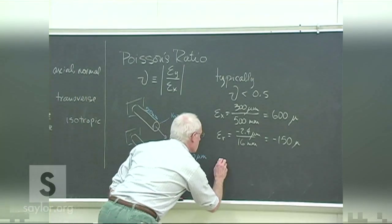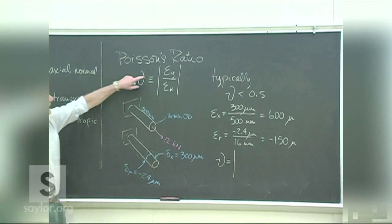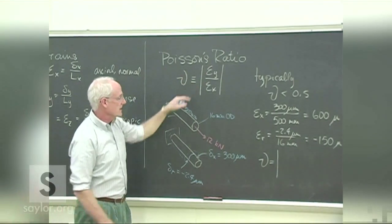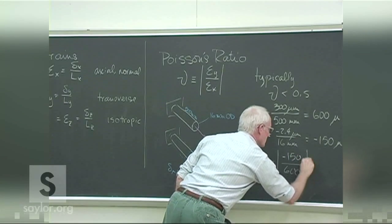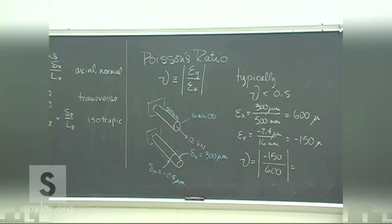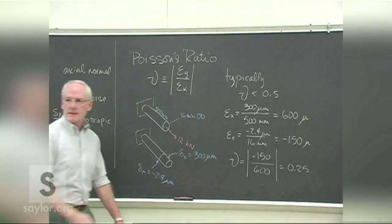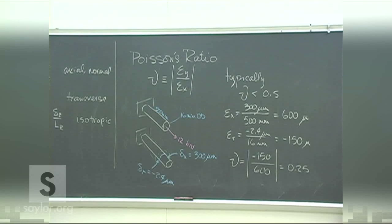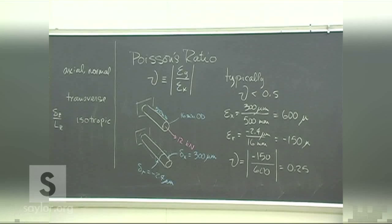We can use those values to calculate Poisson's ratio by taking transverse strains over axial strains: 150 over 600, which is about 0.25. For every unit of axial strain, about 25% of that amount occurs as transverse strain. Simple to calculate and to use.